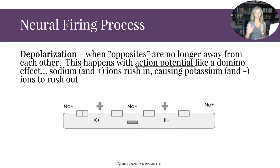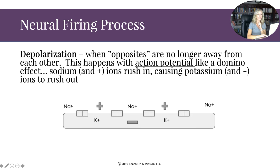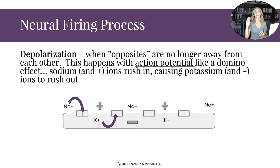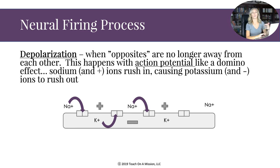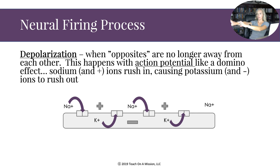When action potential starts going down the axon, the neuron depolarizes. Depolarization is when sodium and potassium are no longer separated. Like a domino effect down the axon, the gates open and sodium rushes in, causing potassium and negative ions to rush out. This continues down the full length of the axon.